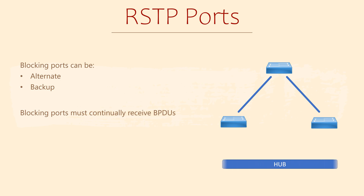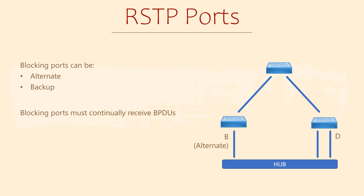Backup ports come into play when there is a shared segment — something like a hub that allows two or more switches to connect to each other. In our example, one switch has two links. One link on this switch becomes designated. On the other switch, the port is blocking. This would be an alternate port, as we just discussed. Now back on the switch with two links, something interesting will happen. The switch will see its own BPDUs — that is, each port will send BPDUs and the other port will receive them. Only one of these can be designated though, so the other must be blocking.